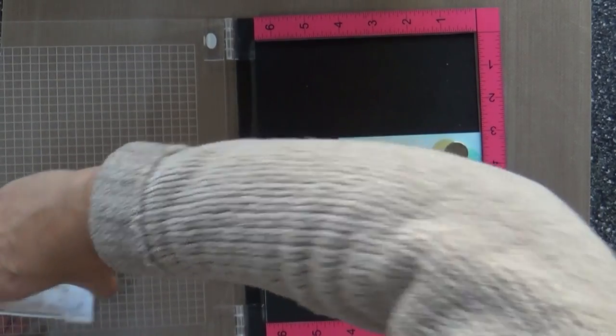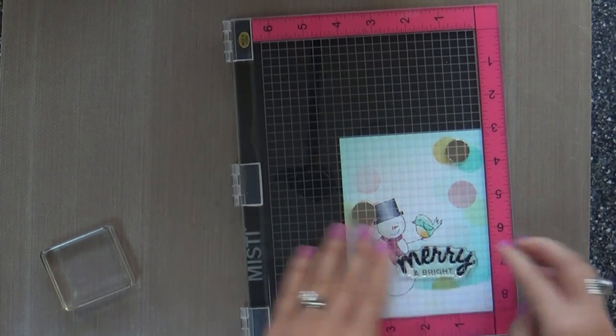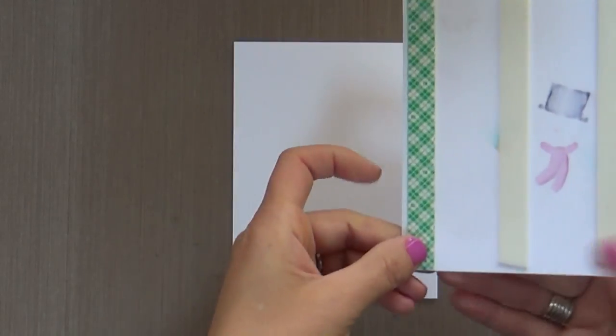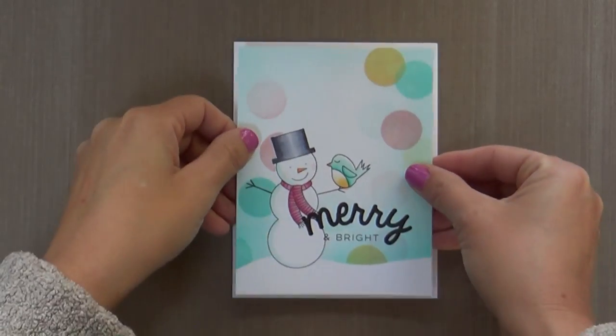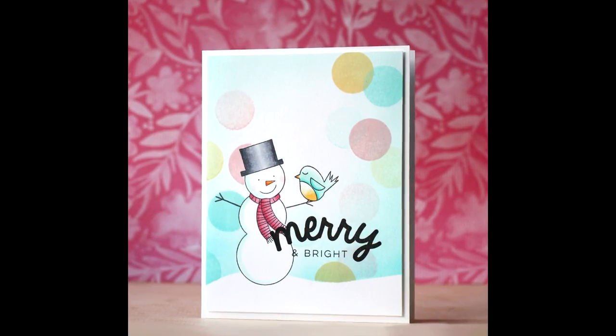So now we're stamping a sentiment. This is from Christmas Sentiments. This is a really great set. It's got some fun, kind of handwritten, scripty big words, and then some classic coordinating fonts. I really like the combination of the fonts. So I put three strips of foam tape on there, popping it up on a Neenah Solar White card base. Bada boom, bada bing, we're done.